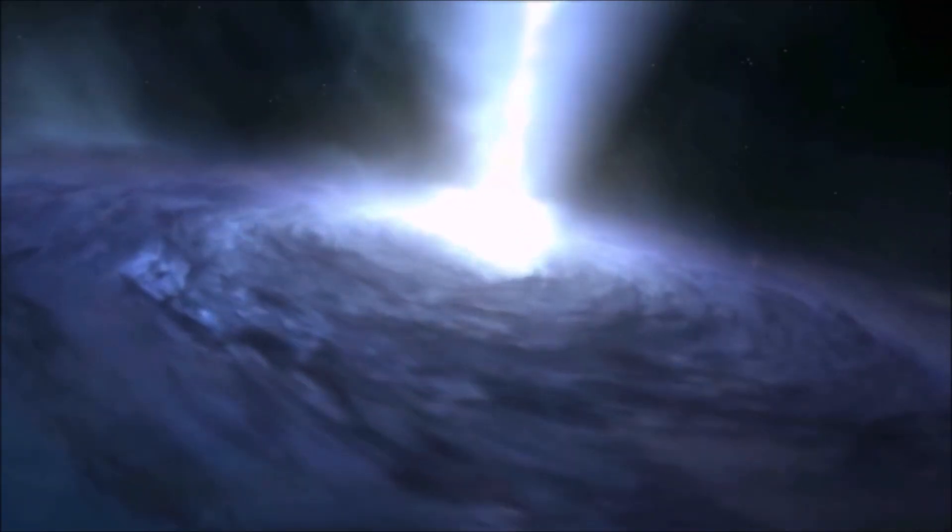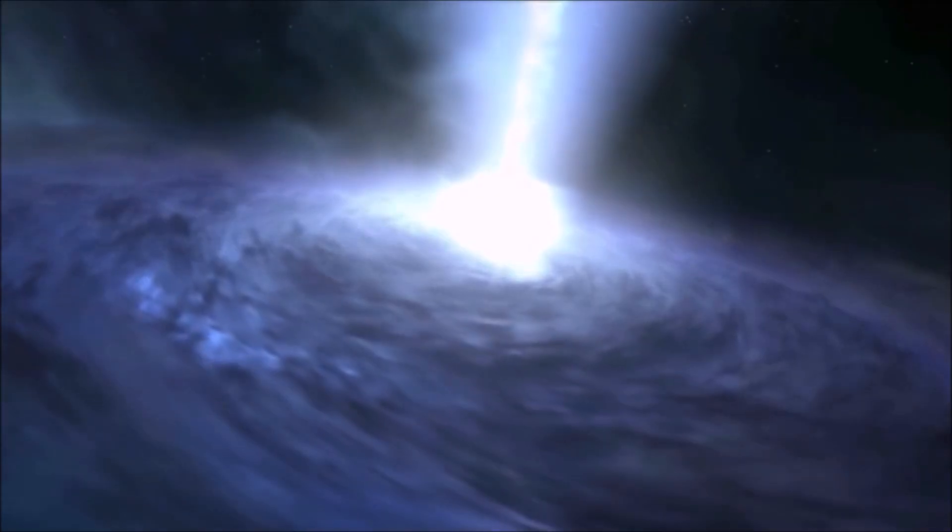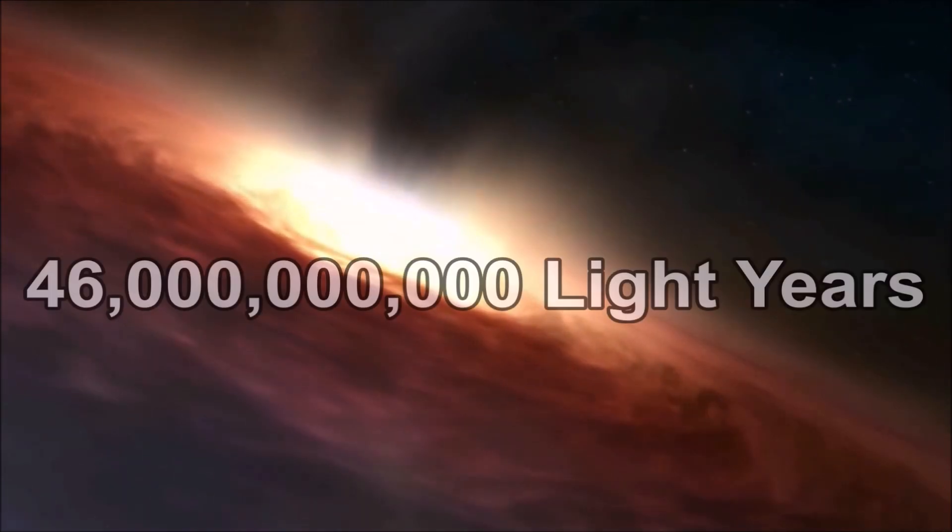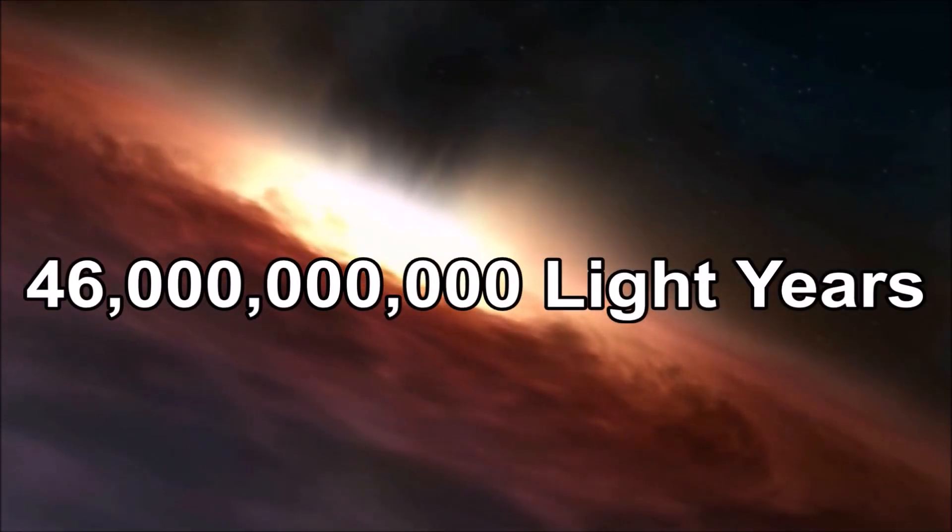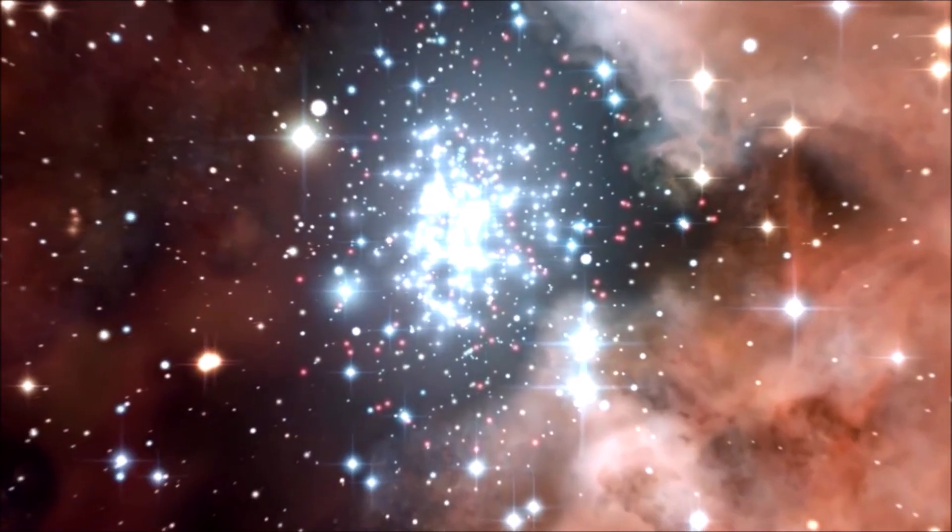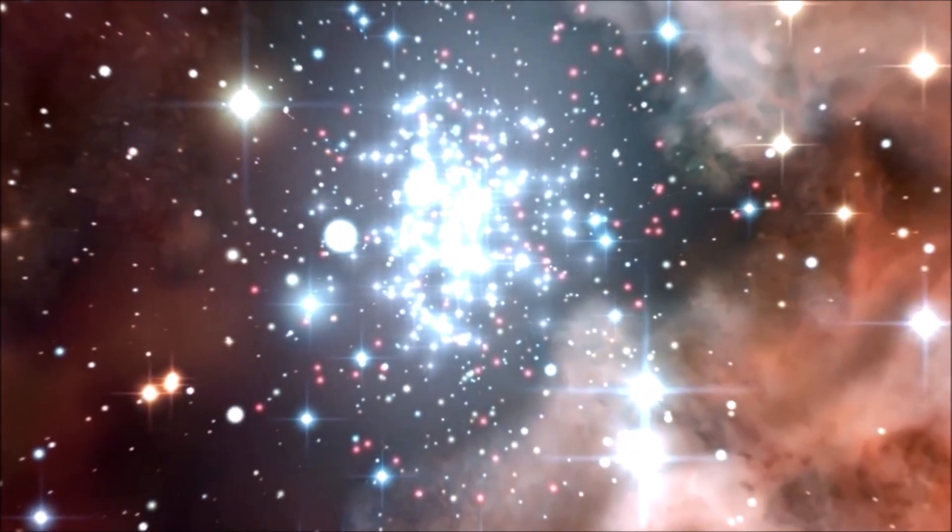Our observable universe is estimated to be 93 billion light years in diameter, but the farthest objects we have ever observed before the cosmic horizon seem to sit at about 46 billion light years into the void. So why is this? Why are we still left with this unanswered question? How can the observable universe be larger than the age of the universe multiplied by the distance travelled by the light within?